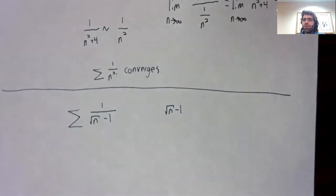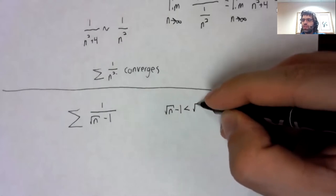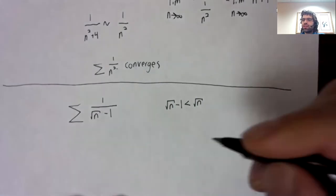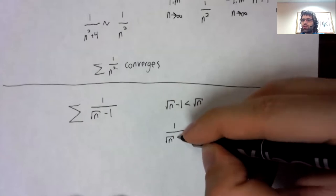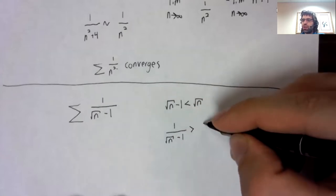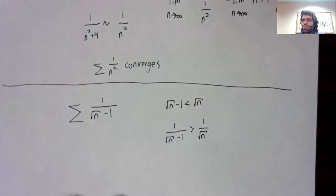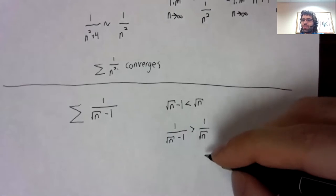But the square root of n minus one is less than the square root of n. That makes one over the square root of n minus one greater than one over the square root of n. And I guess I exaggerated, it will take three lines.